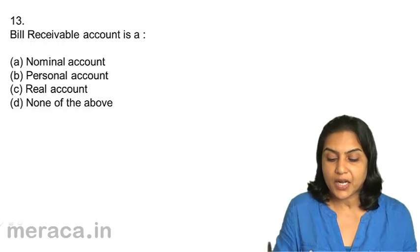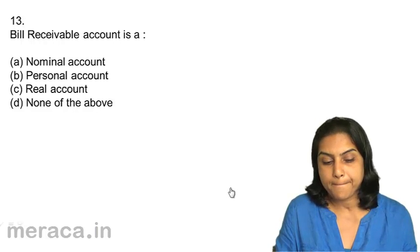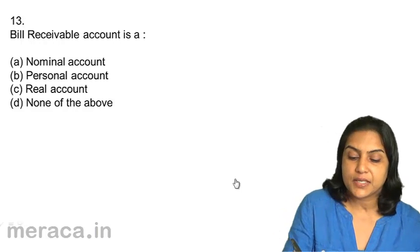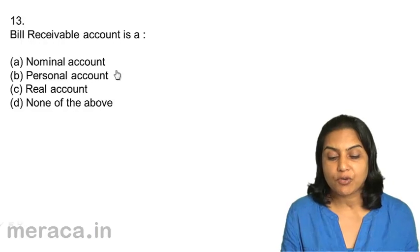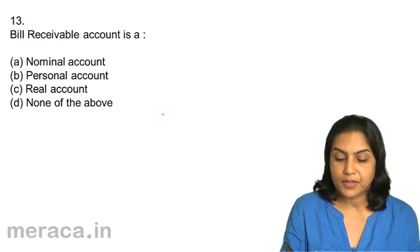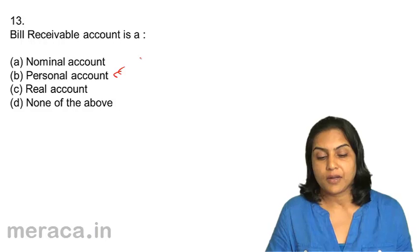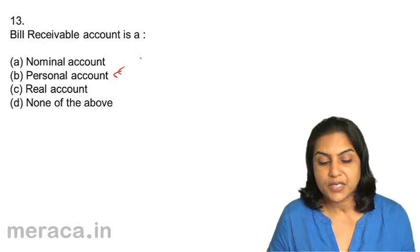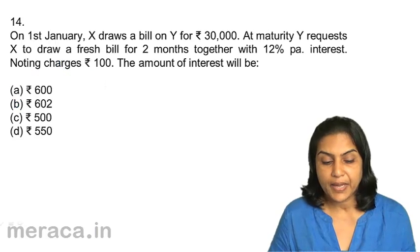Question 13: Bill receivable account is: A. Nominal account, B. Personal account, C. Real account, D. None of the above. It is a personal account representing the account of the debtor. Answer: 13D — none of the above (it is a personal account).